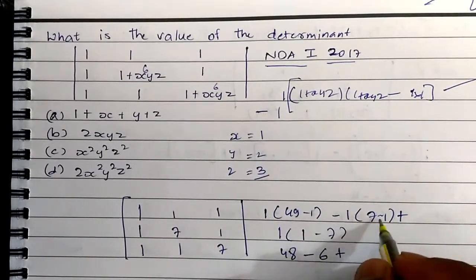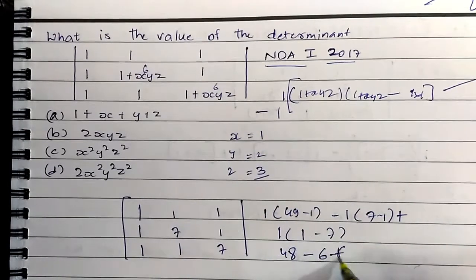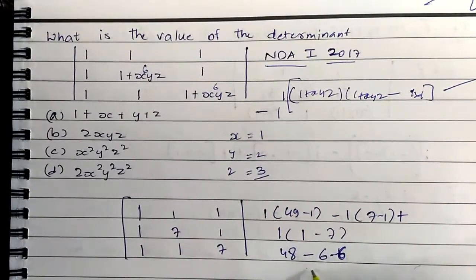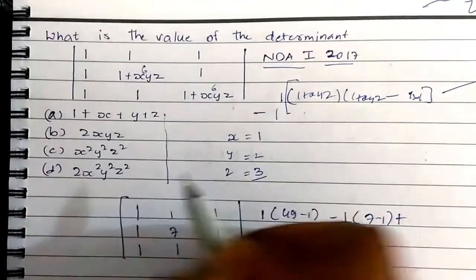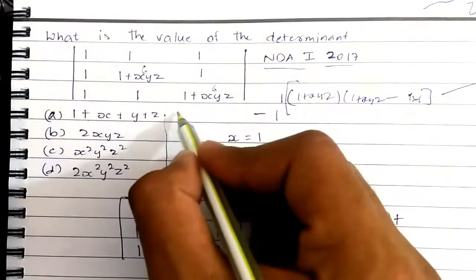Plus 48 minus 6, and it is also minus 6, so it is 48 minus 12. It becomes 48 minus 12 is 36.